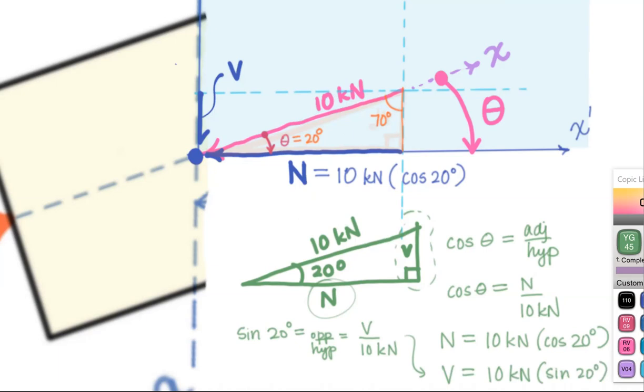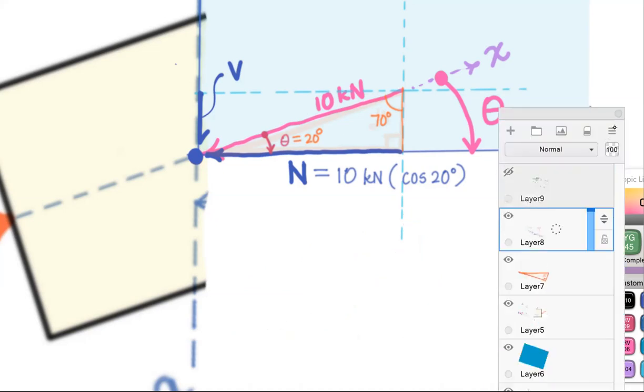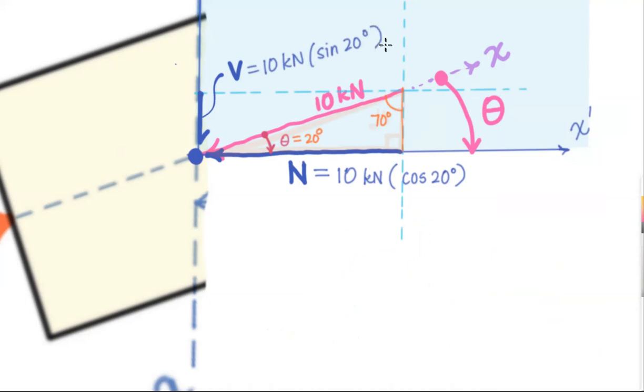And of course, the sine of 20 degrees is equal to the cosine of 70 degrees. So if that method makes sense to you, go for it. Do that. I'm going to get rid of that one and come back to this one. Go back to my pretty purple color and just add this into the mix: 10 kilonewtons times sine of 20 degrees.